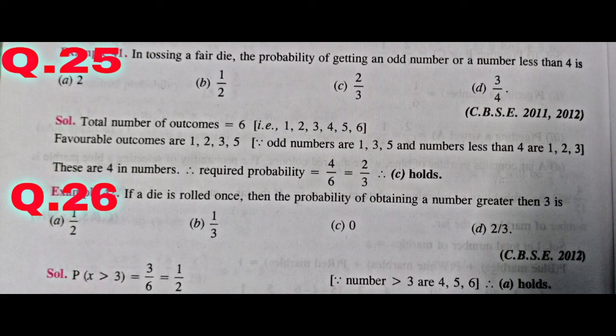Question number 26. A die is rolled once. Find the probability of obtaining a number greater than 3. Numbers greater than 3 are 4, 5, and 6 — so 3 favorable outcomes. Total outcomes = 6. Probability = 3/6 = 1/2.